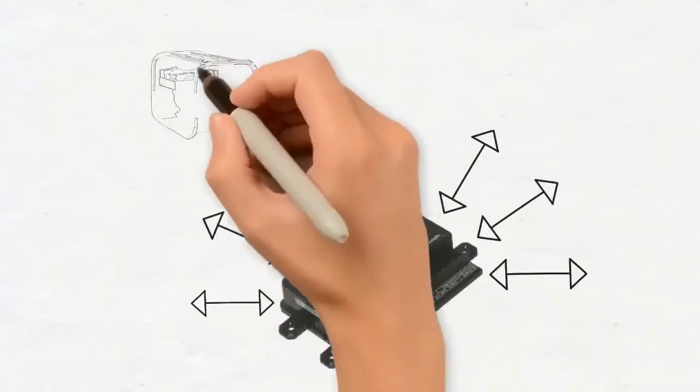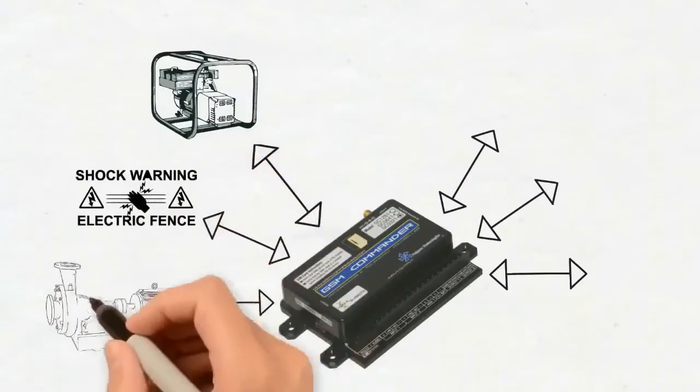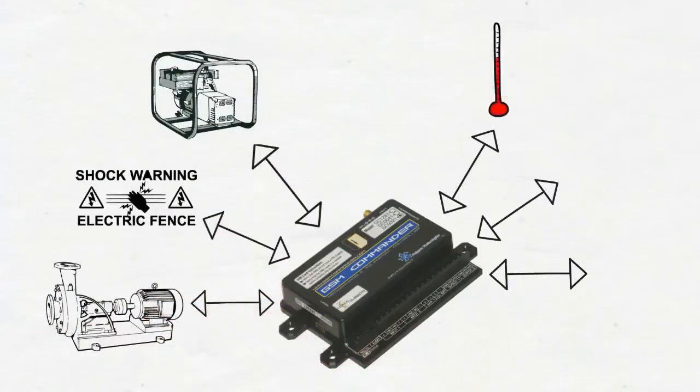You can connect anything from simple on-off devices like generators, electric fences and pumps to measuring probes for things like temperatures, pressures or perhaps tank levels.